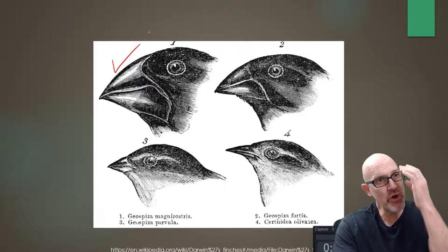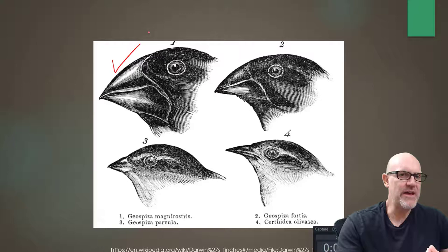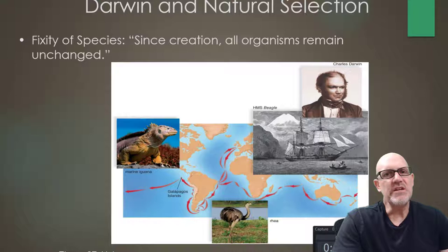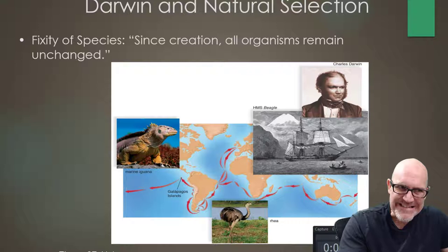Darwin saw these four different populations of finches at four different locations, and he thought to himself, 'I can't imagine that these finches were just sort of created in place — there must be a better explanation.' And that brings us to something very important historically at the time. Darwin, like most scientists of the day, believed in something called fixity of species — which basically means that since creation, all organisms remain unchanged, and each species existed in its particular habitat and had been there since creation.